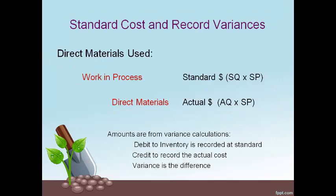Direct materials moved to the production line used to make products are recorded with a debit to work in process and credit to direct materials. The inventory account always changes by the standard or estimated amount. The credit is always an actual amount, and the difference in actual and standard is the variance. Unfavorable variances are recorded with a debit and favorable variances are recorded with a credit. All amounts are stated in the variance calculation.